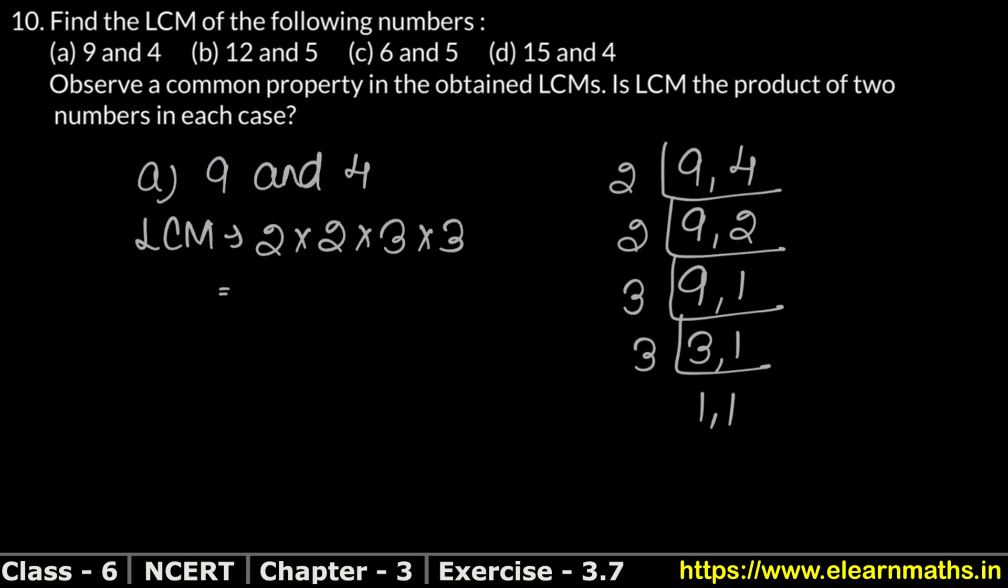2, 2 is 4. 4, 3 is 12. 12, 3 is 36. So if you see, what is 36? It is 9 into 4. We multiplied. It's the product of 2 numbers. Right? Next part let's do. B part is ours.